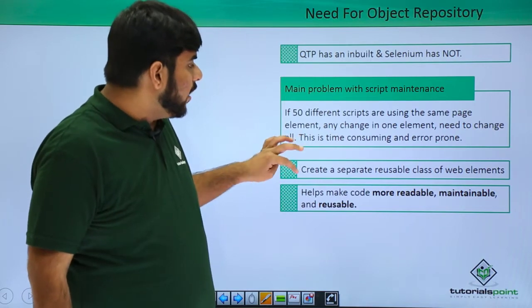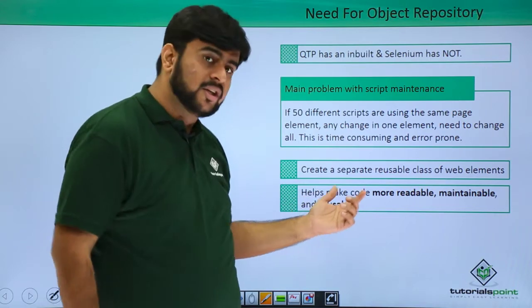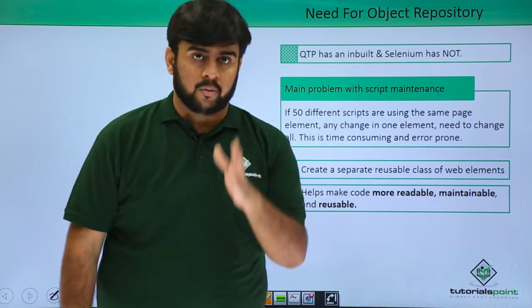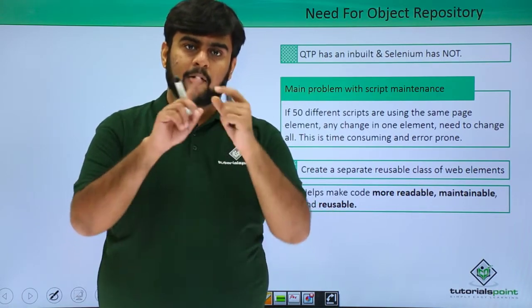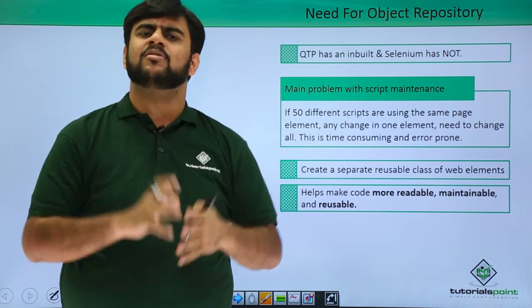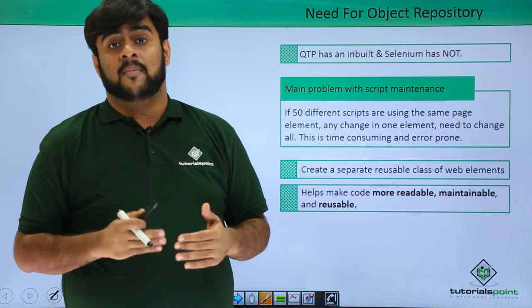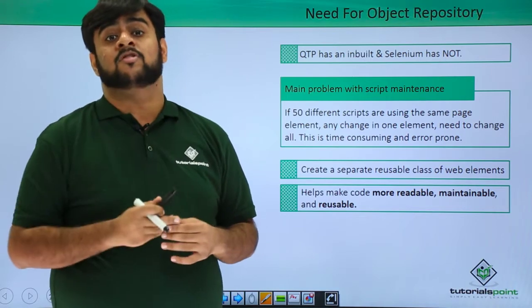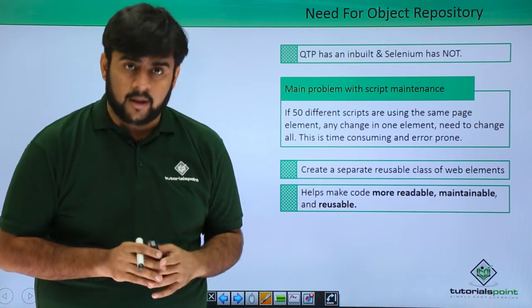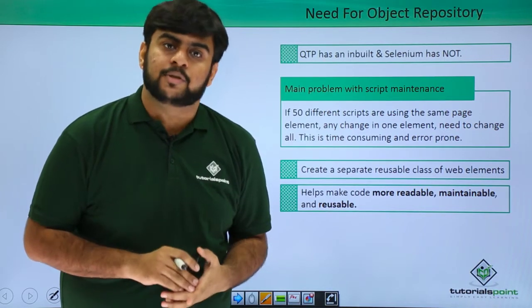So what we do is we create a reusable class of web elements. The advantage of doing this is that we get more readable, more maintainable, and more reusable code. In this way, we have one class which contains all the web elements, and we simply use this class wherever we want to perform some action on a web element. For this, we have a model called the Page Object Model. This was the reason why we actually need an object repository.